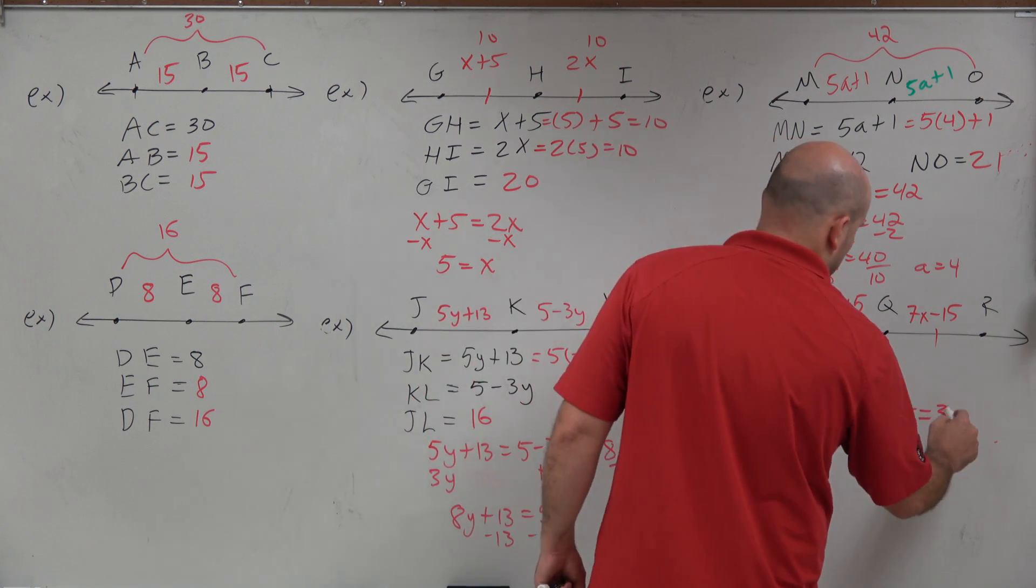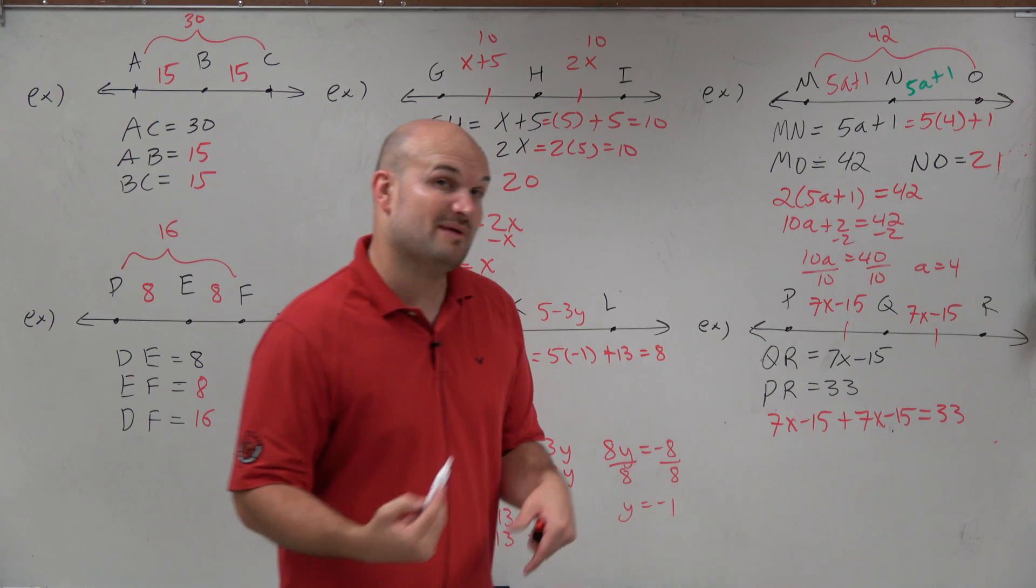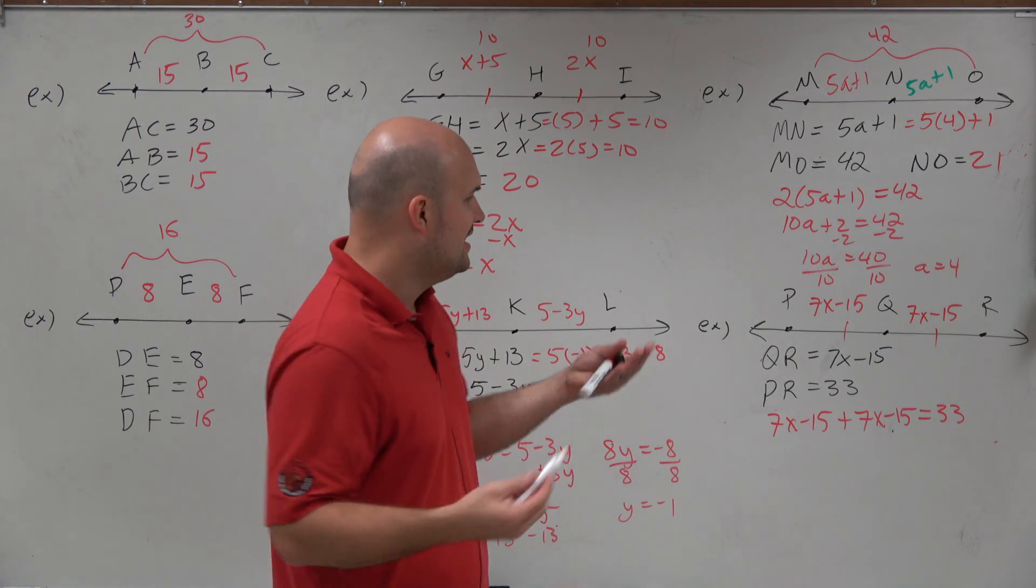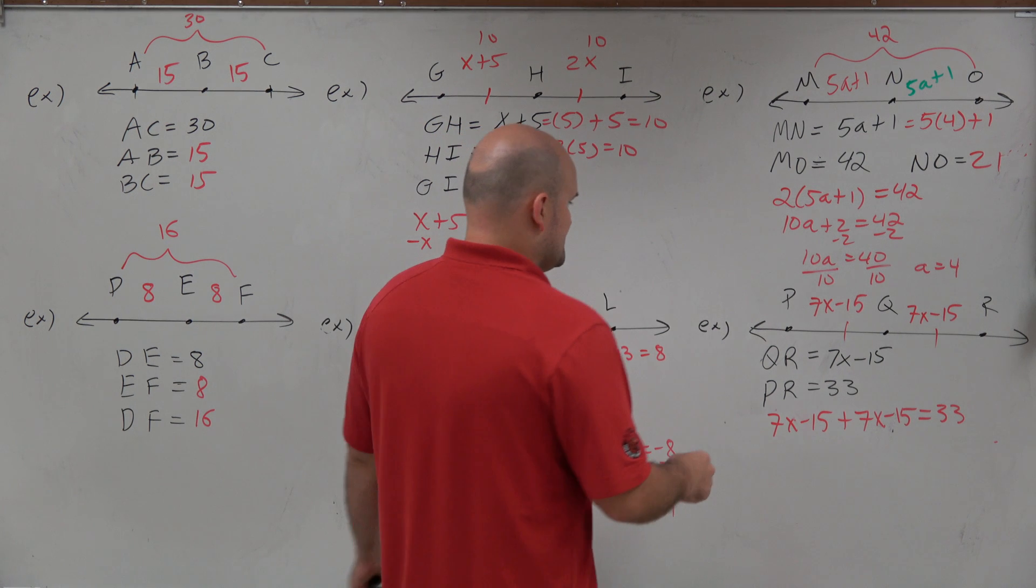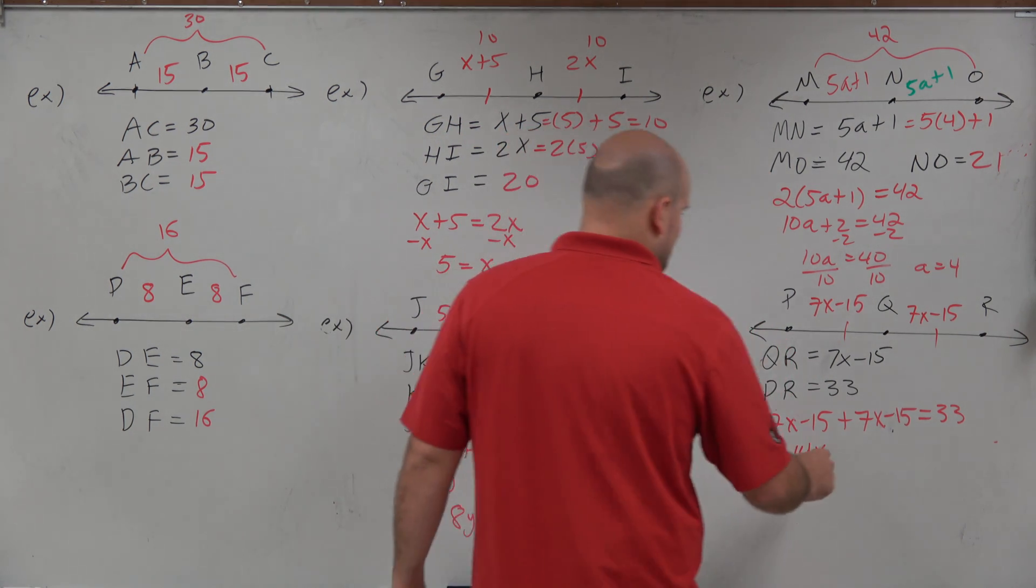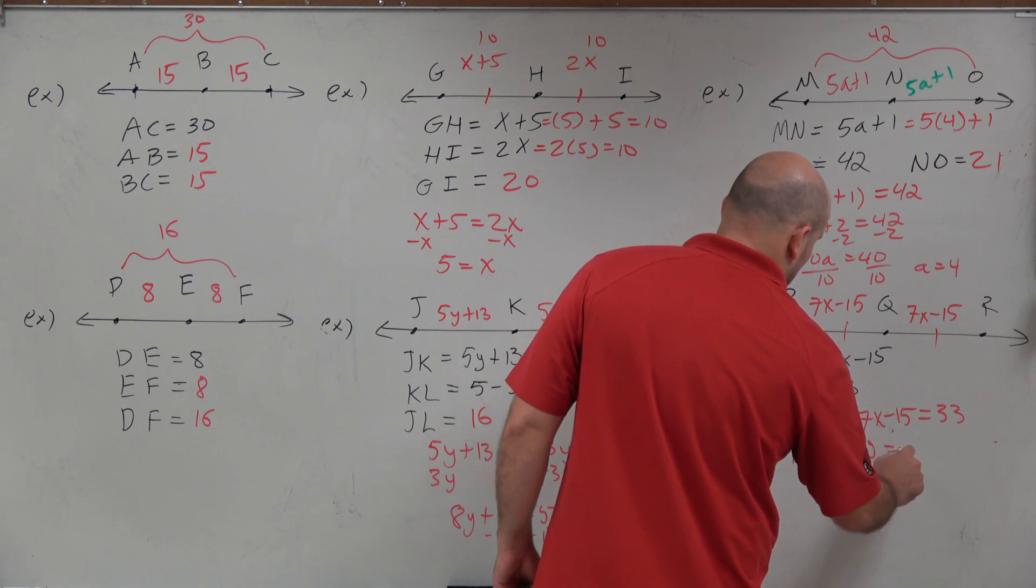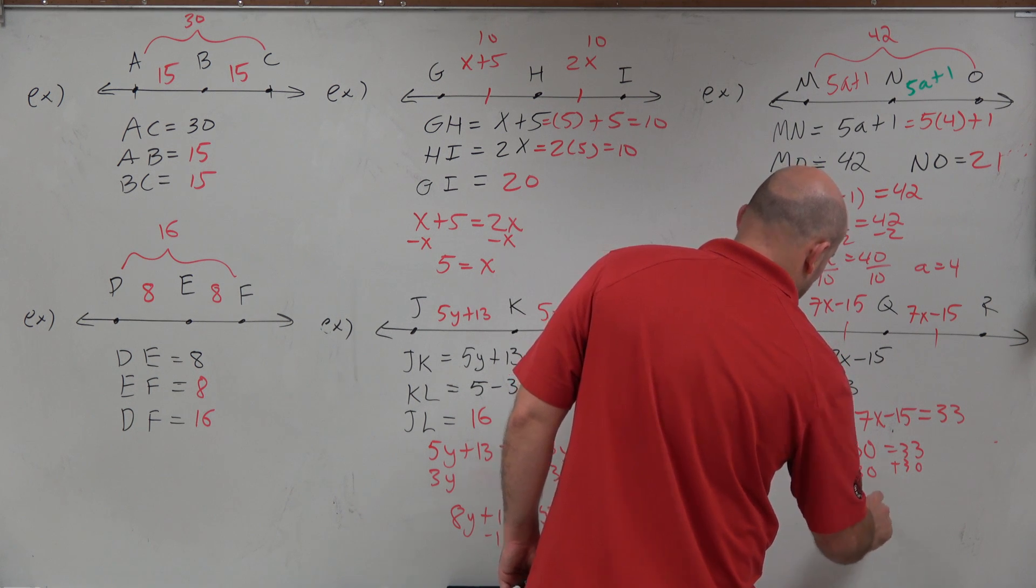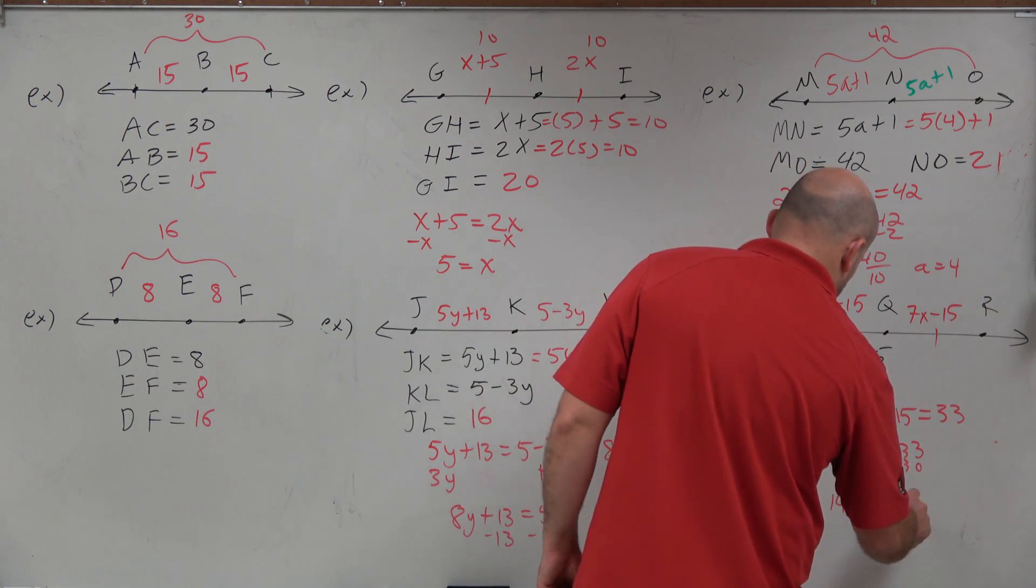And that's supposed to equal 33. OK. So now you can combine your like terms. So 7x, you can only combine the 7x and the 7x, and the negative 15 and the negative 15. So 7x plus 7x is going to be 14x. Minus 15 minus 15 is going to be a negative 30 equals 33. Add 30, add 30, add 30,